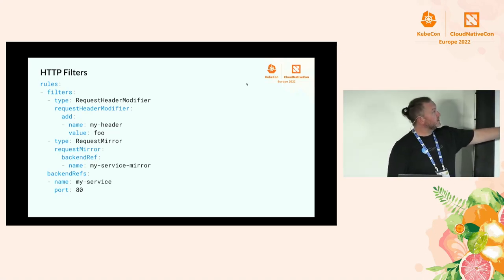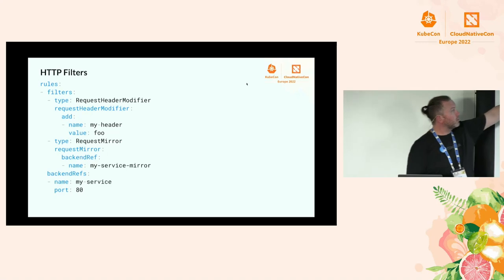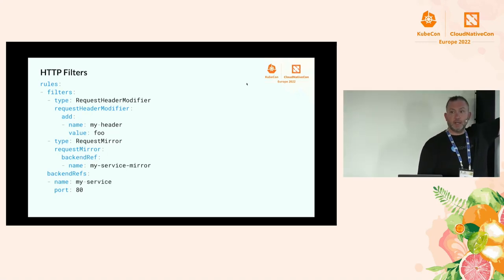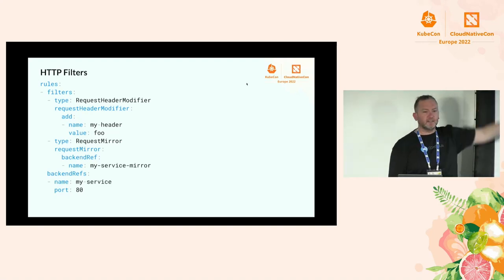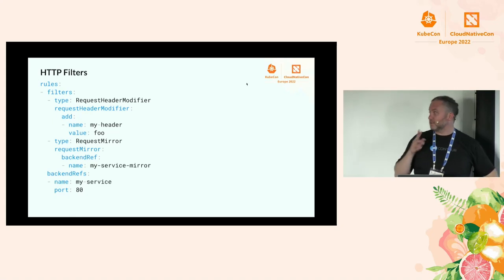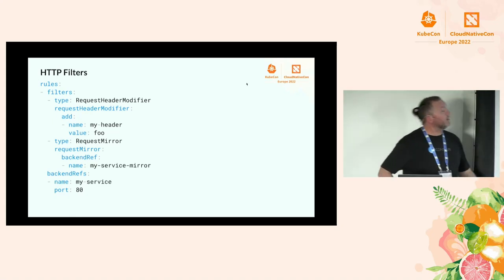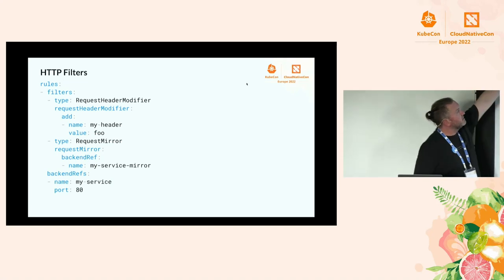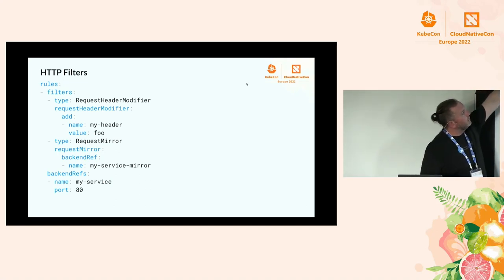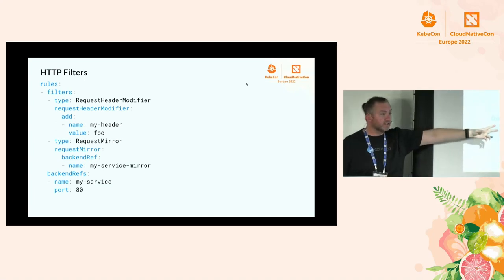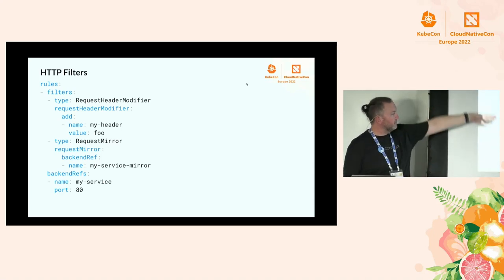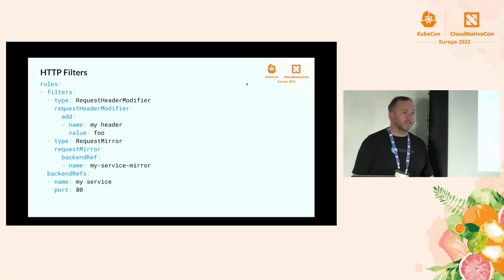HTTPRoute also has filters. Request mirror is an extended HTTP filter. Request header modifier is extended. Redirect is core. You can add, set, or remove headers, send a mirror of traffic to another service, and if none of those match, traffic goes to the standard backend.